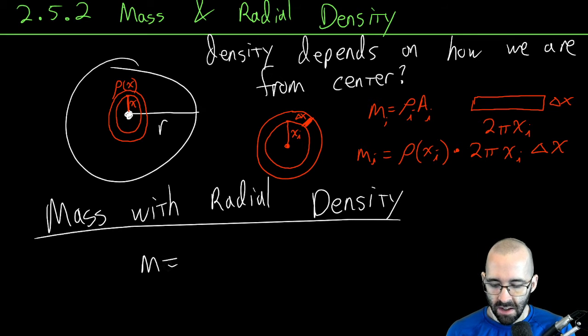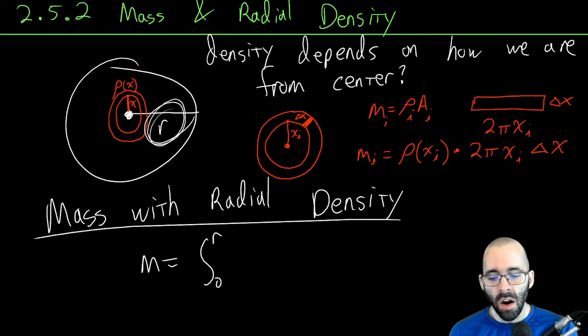That's going to look like the integral from a radius starting at zero up to a radius going all the way to r, whatever the radius of that plate is, of 2π. We can take the 2π out in front.